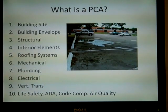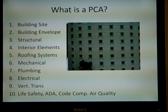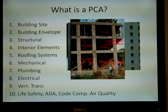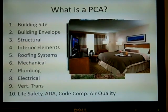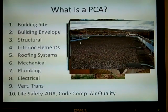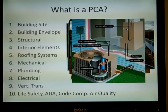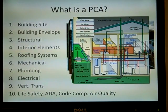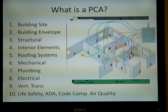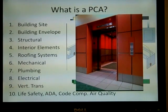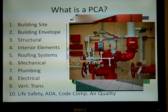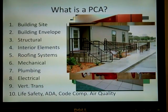For the building site, drainage, retaining walls, paving, curbing, and parking are evaluated. For the building envelope, the exterior walls and windows are examined. The structural foundation and framing is also considered. For interior elements, the units, rooms, common areas, and other interior features are examined. The roof is assessed. The HVAC system is reviewed. Plumbing is examined, as well as electrical. If a building has elevators, escalators, or moving walkways, they are assessed. Lastly, a PCA professional would examine code compliance, safety, accessibility, air quality, and other considerations.